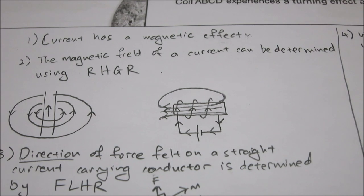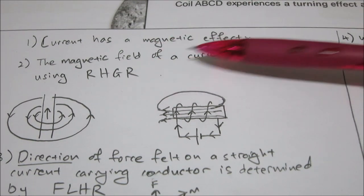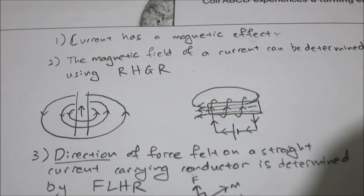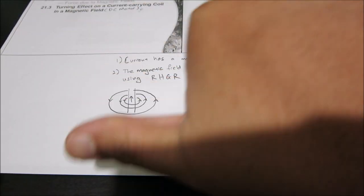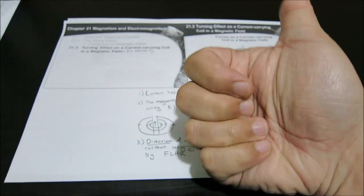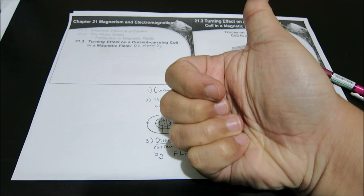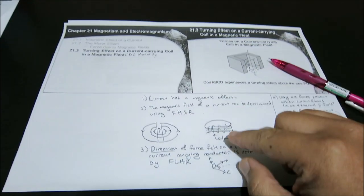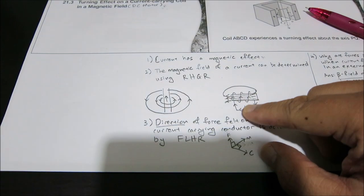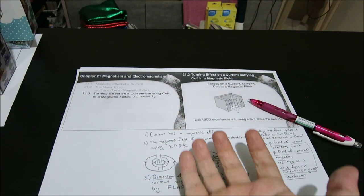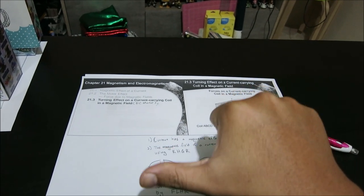The direction of the magnetic field of a current can be determined using the right hand grip rule. The right hand grip rule is basically giving a thumbs up sign with your right hand. For a straight wire, you use the straight portion of your thumb to indicate the direction of the current, and the direction of the magnetic field is told by your curling fingers.